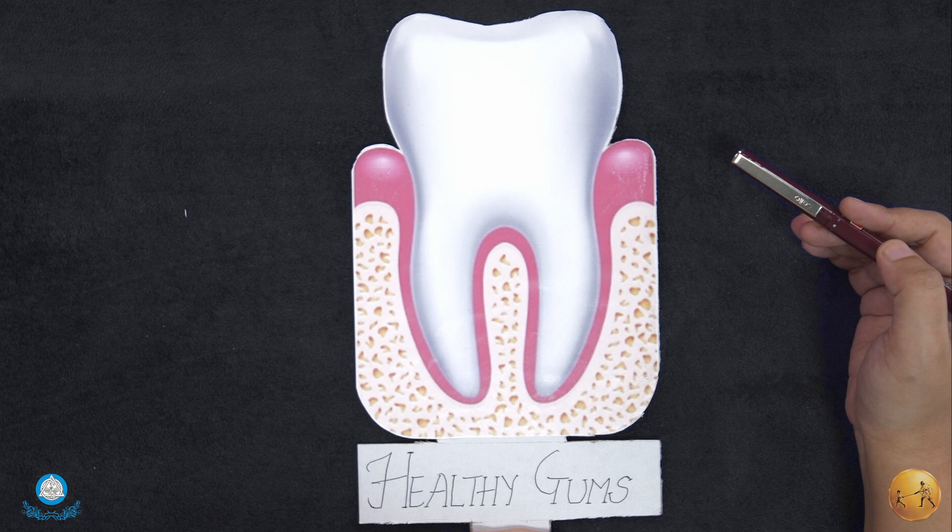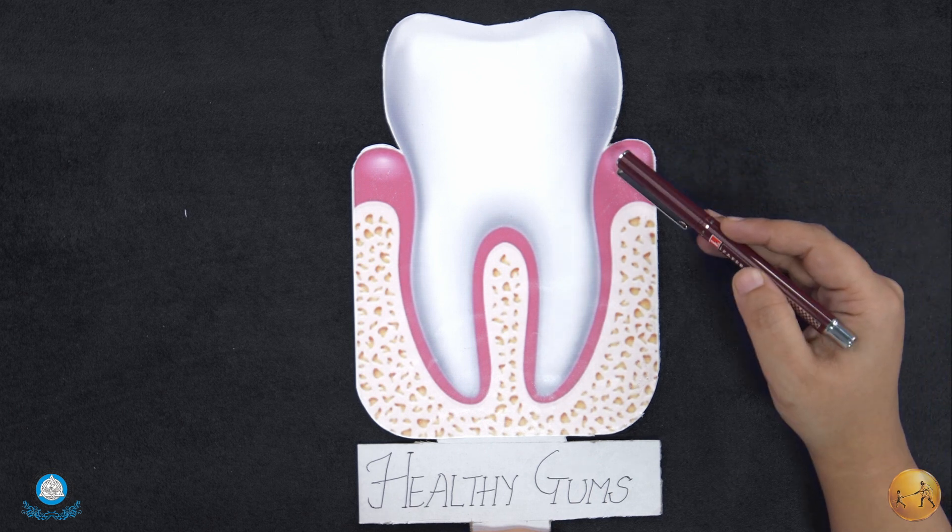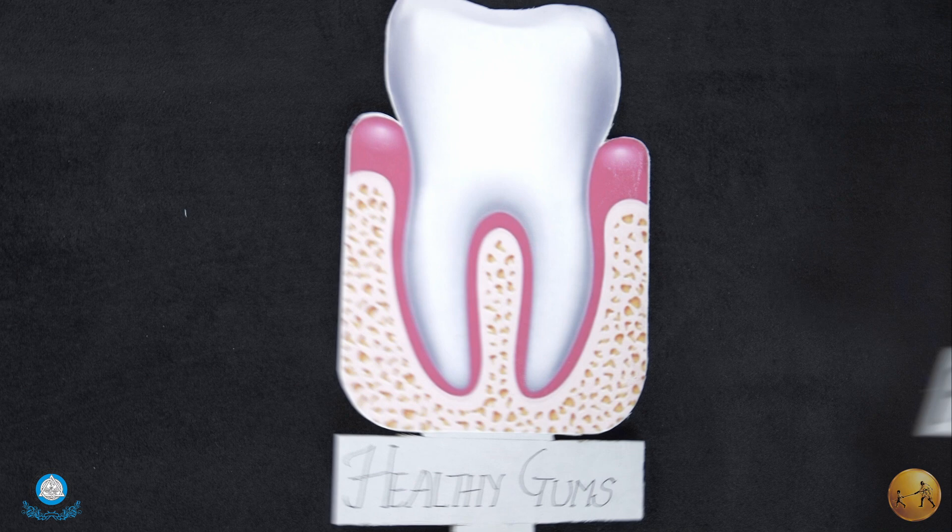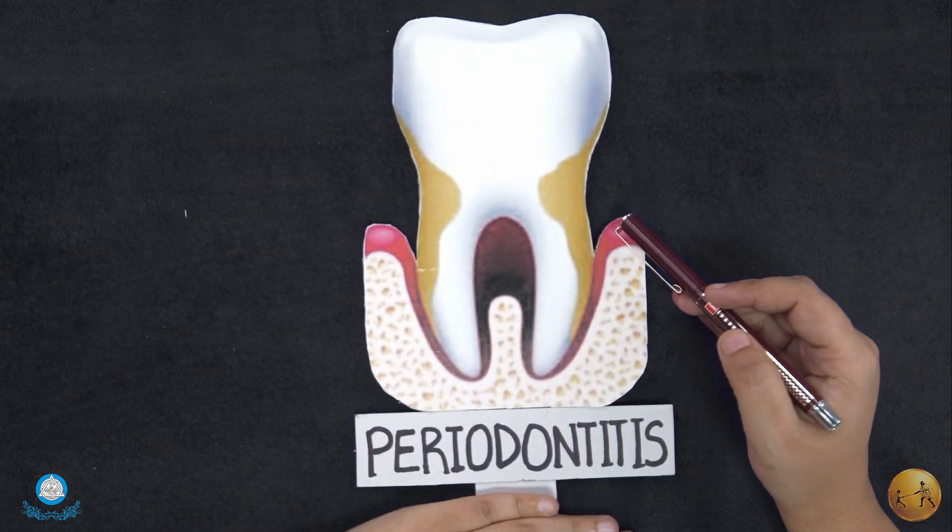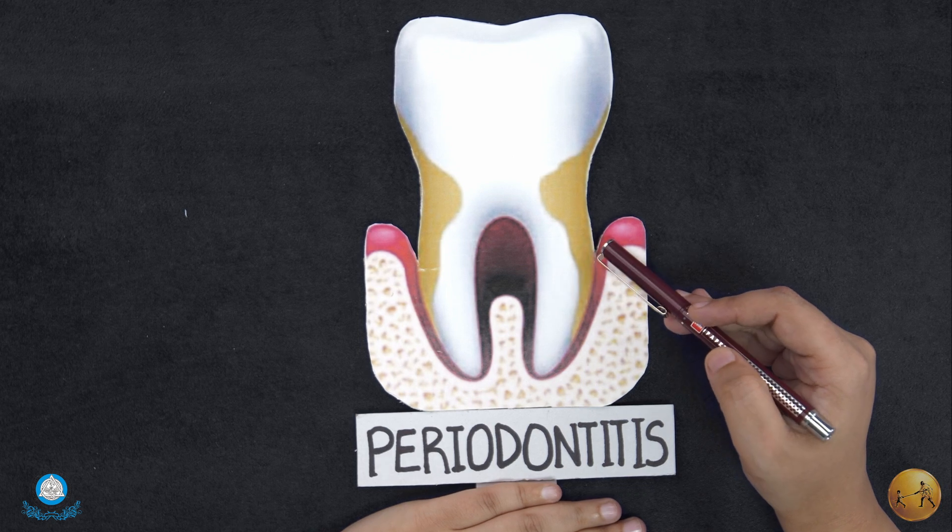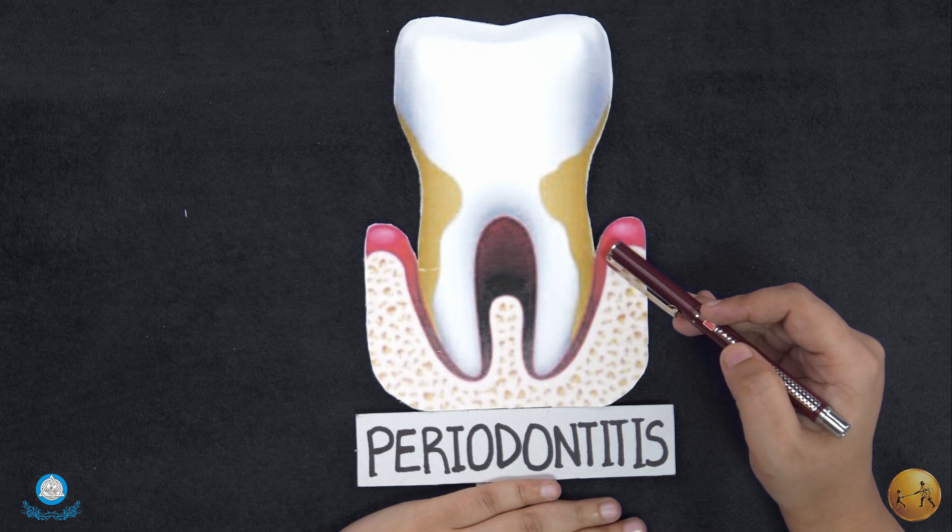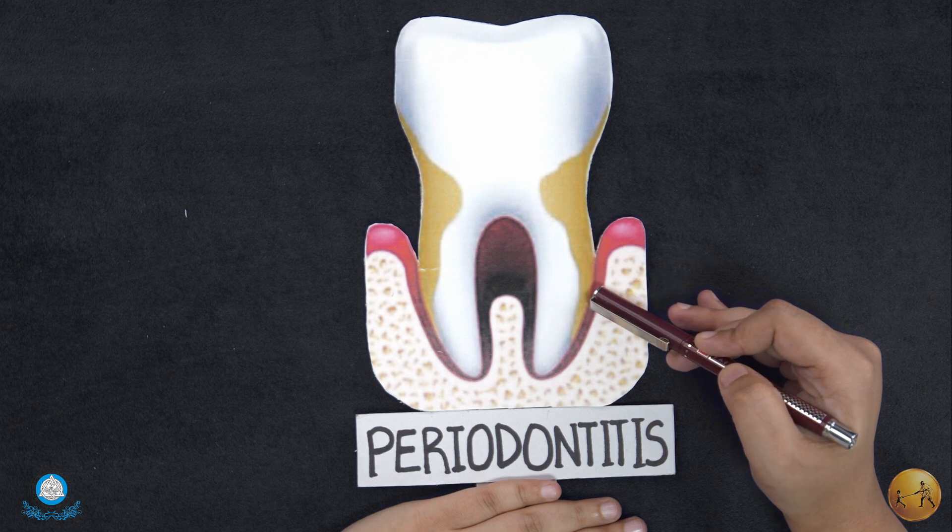Periodontal pocket is defined as deepened gingival sulcus. As you can see here in this picture, the sulcus is deepened. So periodontal pocket is defined as pathologically deepened gingival sulcus.